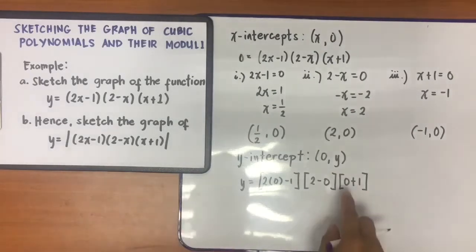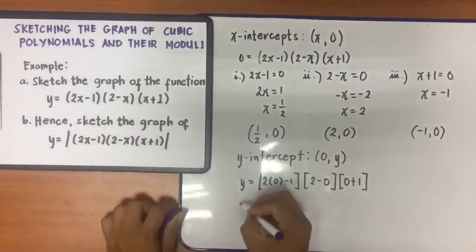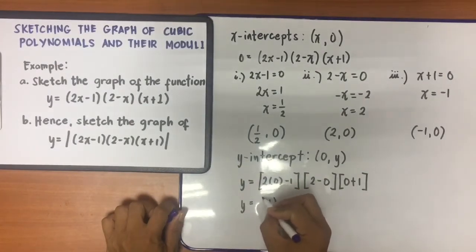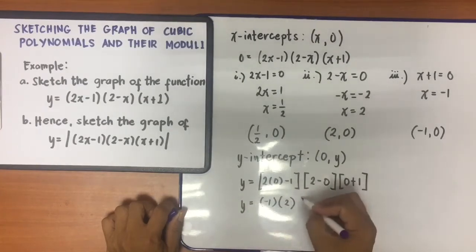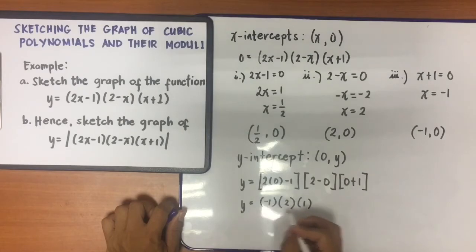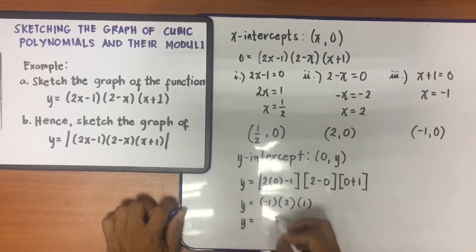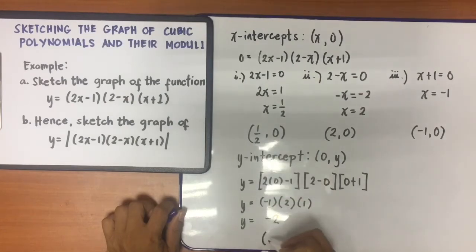So what I did is make all x values equal to 0. y is now equivalent to (0 − 1)(2 − 0)(0 + 1), which is (−1)(2)(1). Multiplying these three numbers gives y = −2. Therefore, the y-intercept is (0, −2).